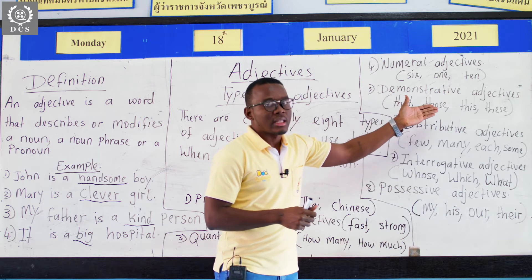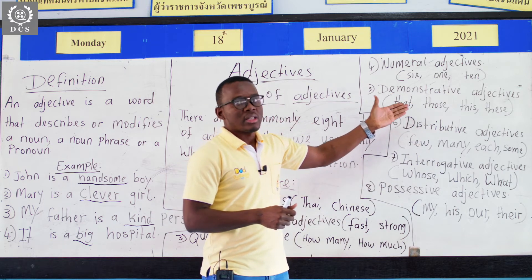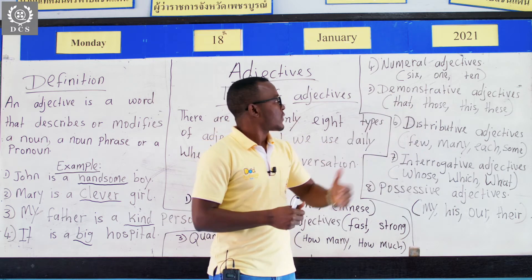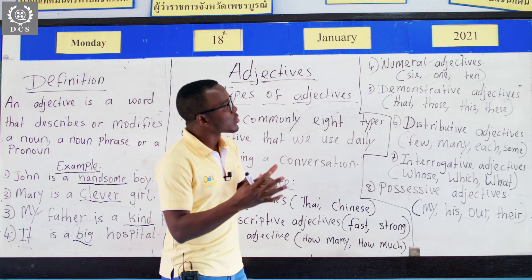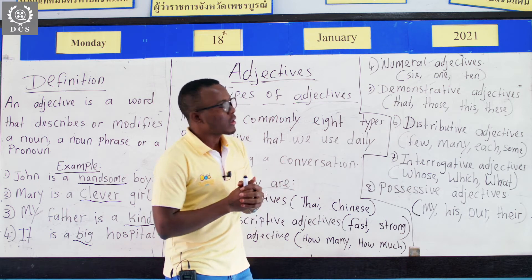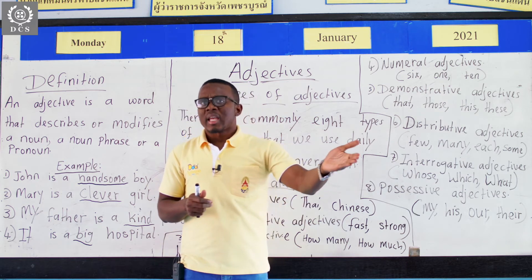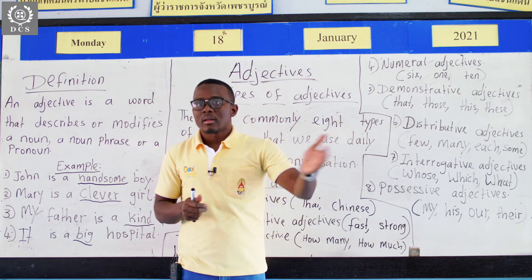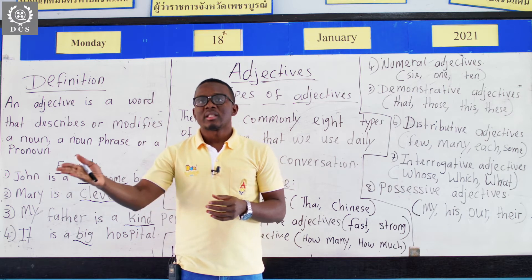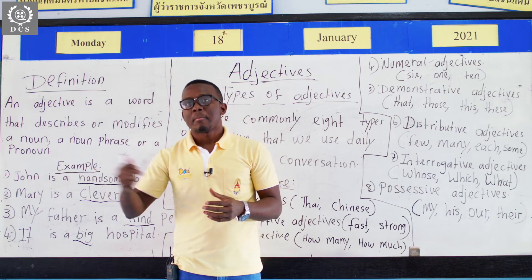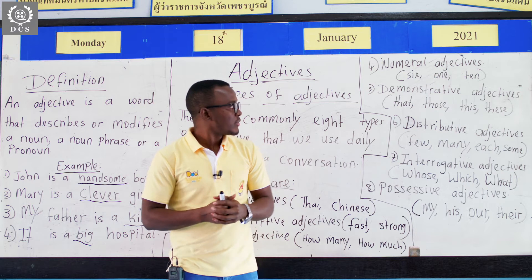Demonstrative adjectives. They are used to demonstrate. Like: that is his book. This is my book. So they are used to demonstrate.